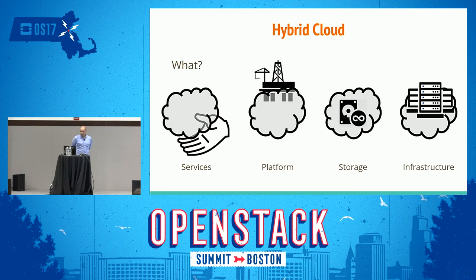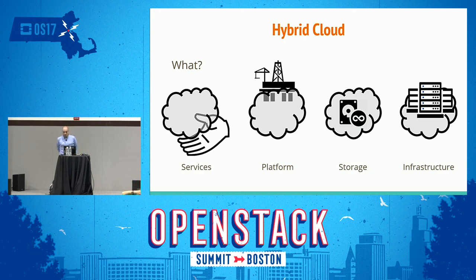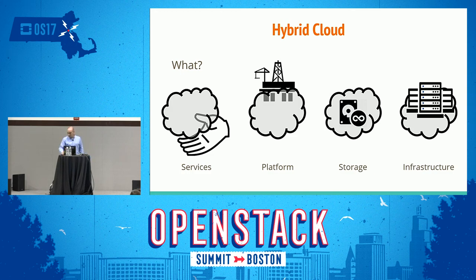We use infrastructure in use cases like cloud bursting, where on-prem can start consuming services from the cloud when there are not enough resources. We use that for disaster recovery plans, or we use it side by side — private and public together — for increasing the uplink to the internet or just saving costs.